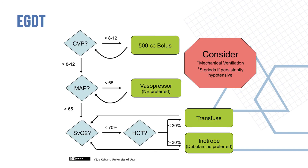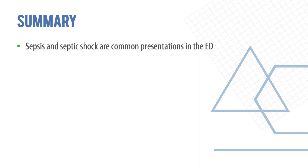Early goal-directed therapy management depends on the response to the initial fluid bolus. If CVP is more than 8 to 12, mean arterial pressure is measured, and the patient may or may not require transfusion depending on how things look after initial resuscitation.